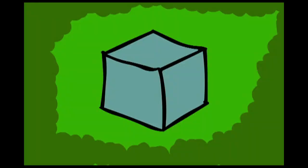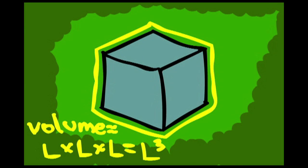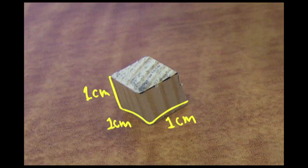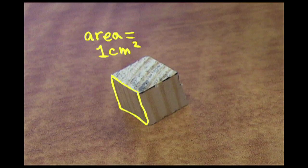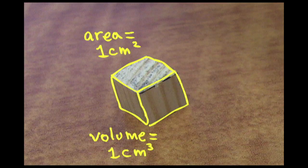Let's picture a cube. The area of one face on the cube is the length squared, and the volume is the length cubed, hence the square cube law. This cube has sides that are one centimeter long. The area of a face on the cube is one square centimeter, and its volume is one cubic centimeter.